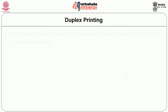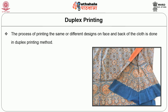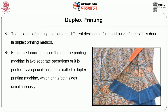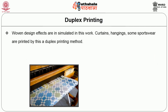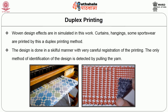Duplex printing is the process of printing the same or different designs on the face and back of the cloth. Either the fabric is passed through the printing machine in two separate operations, or it is printed by a special duplex printing machine that prints both sides simultaneously. Duplex printing is also called printing of both sides with the same or different motifs, producing woven fabric effects. Curtains, hangings, and some sportswear are printed by this method.